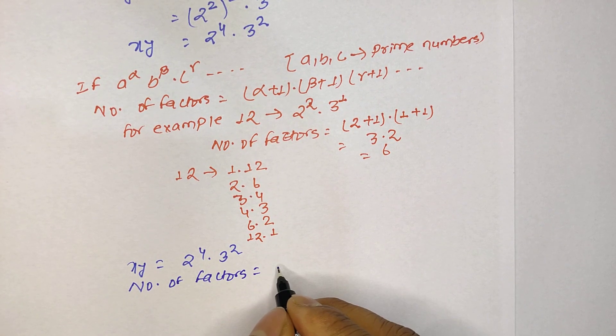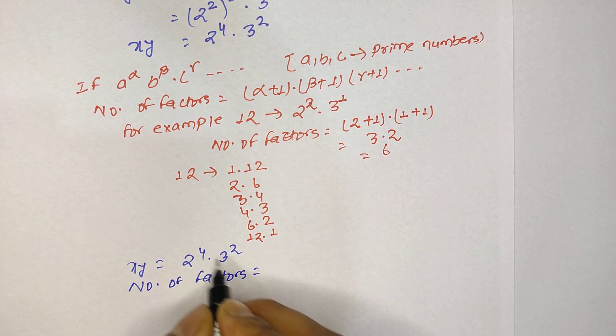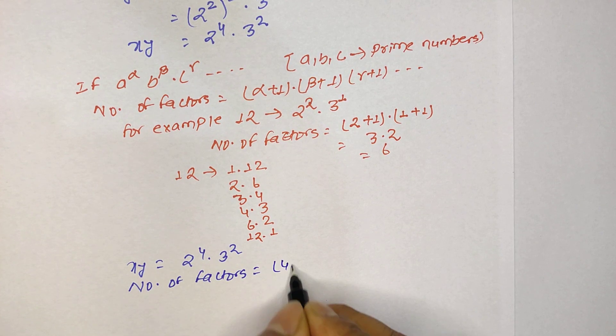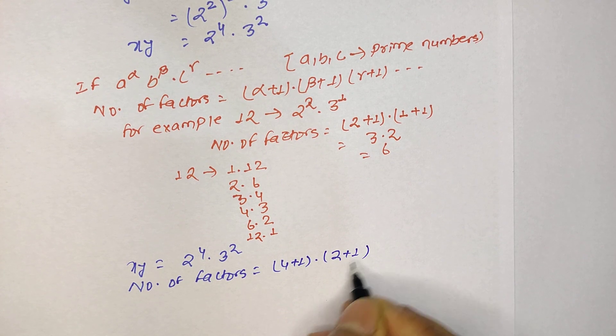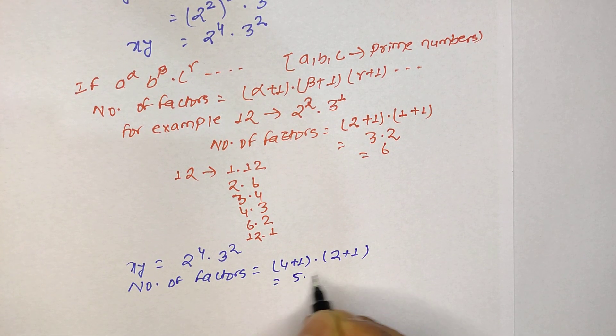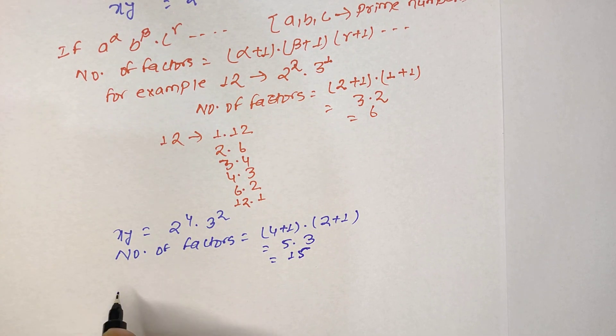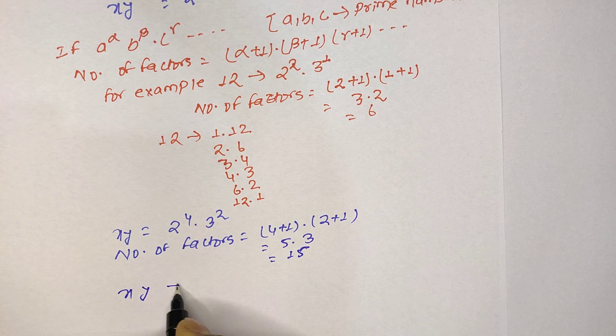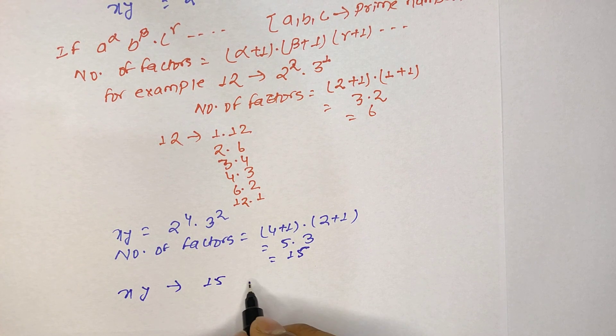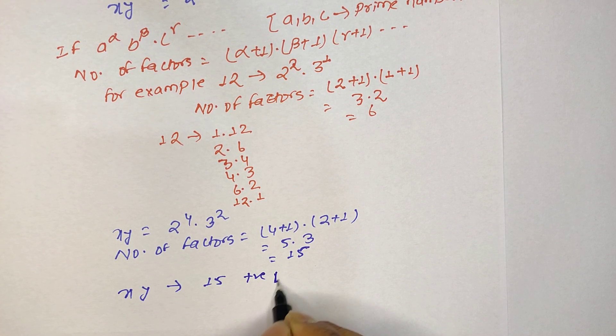So the number of factors equals alpha plus 1. Our alpha is 4 and beta is 2, so 4 plus 1 times 2 plus 1. And 4 plus 1 is 5 and 2 plus 1 is 3, so 5 times 3 is 15.